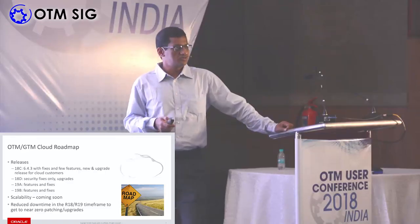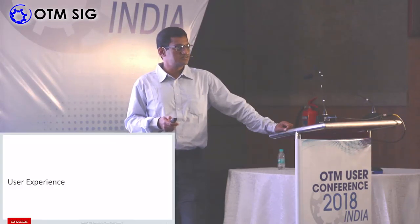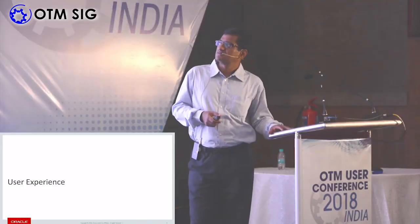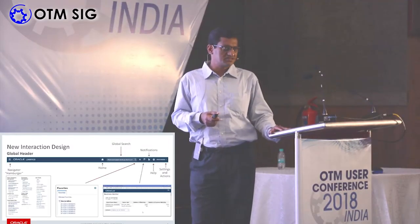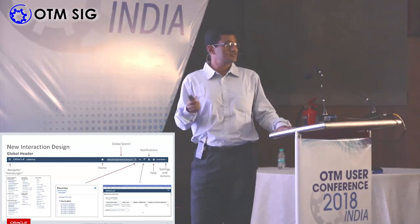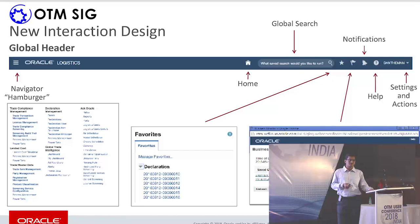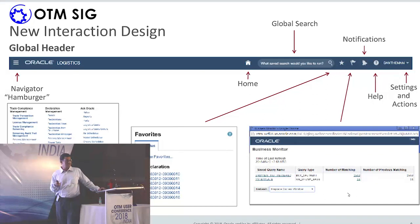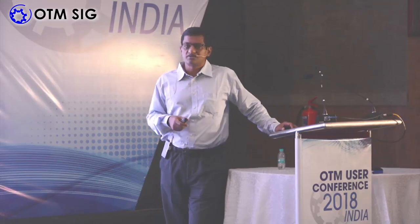I'll now cover user experience enhancements. This is a new user interface design. Most of you on 6.4.2 and higher have seen this — the same look and feel with hamburger menus, homepage, navigation, and global search. There are additional enhancements added to the product beyond that base design. Let's start with global search.